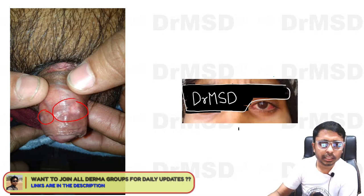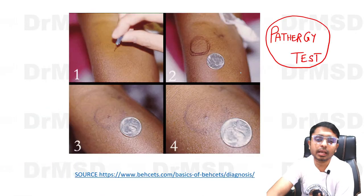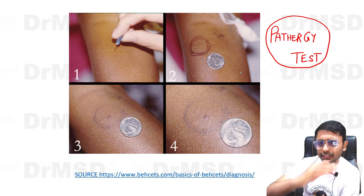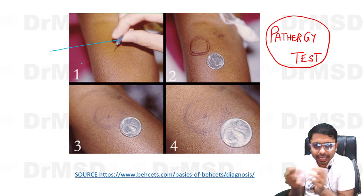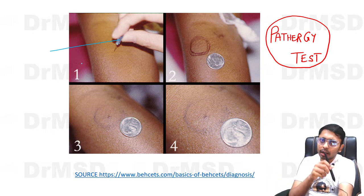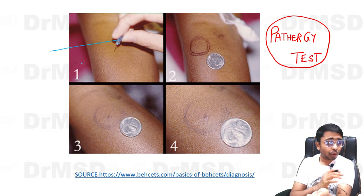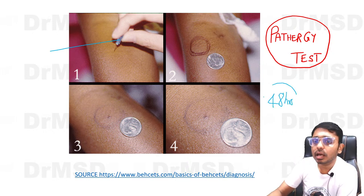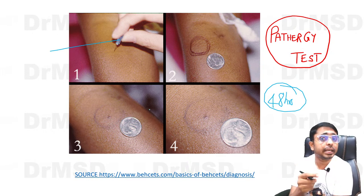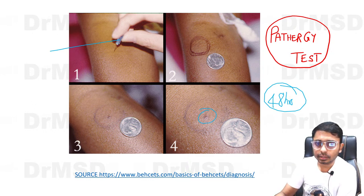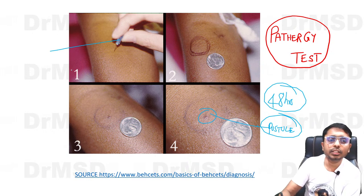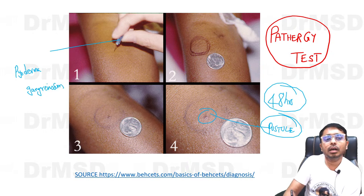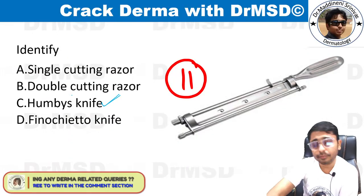To perform the pathergy test: take a sterile needle, mark the left forearm, and give a sterile prick over it. Call the patient back after 48 hours and examine the pricked area. If the site develops a pustule, then pathergy test is positive. Pathergy test is positive in Behcet's syndrome and also in pyoderma gangrenosum — very, very important.